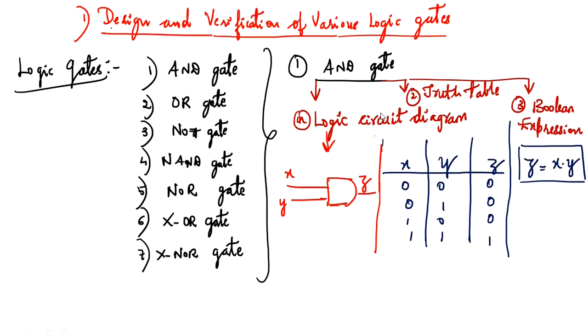First we will look at the AND gate programming, and then on the basis of the AND gate we will also write OR, NOT, NAND, NOR, XOR, and XNOR.